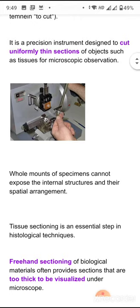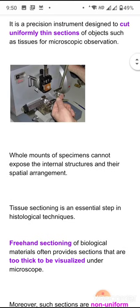Large specimens or whole mounts of specimens cannot expose internal structures and spatial arrangements, so we require sections of these specimens. For example, a minute capillary — we cannot take the whole mount of a capillary and look under the microscope; we require the section of this capillary to look into the tissue structure. So we will go for sectioning.